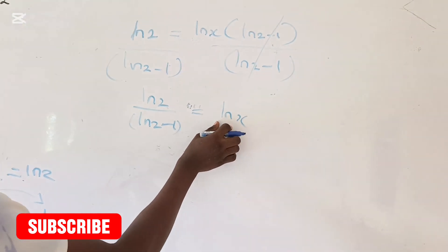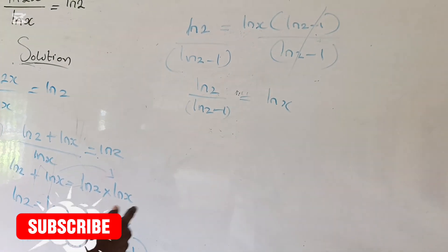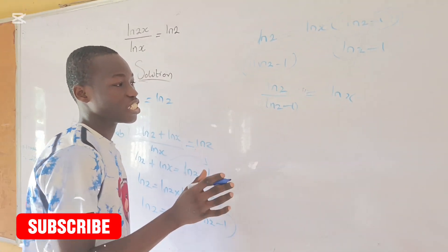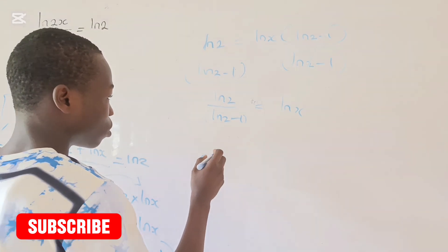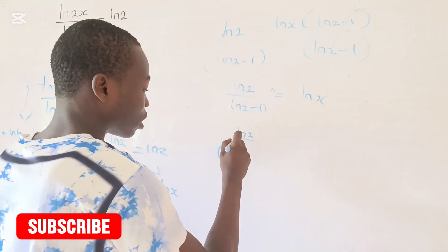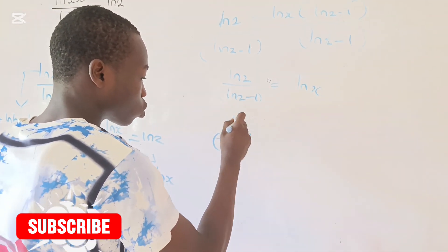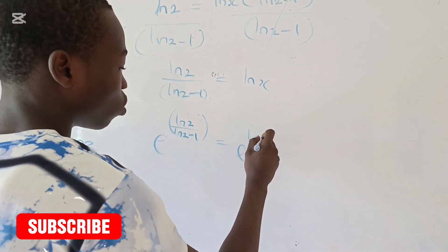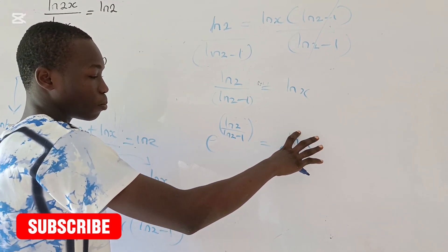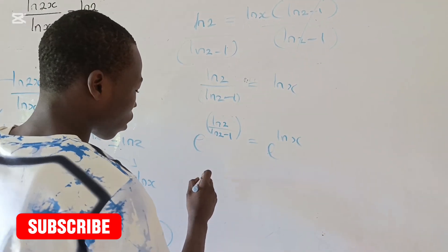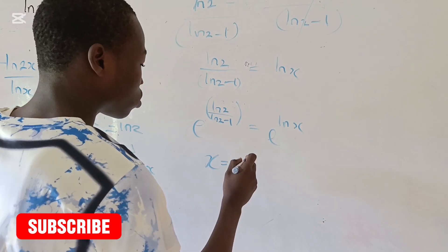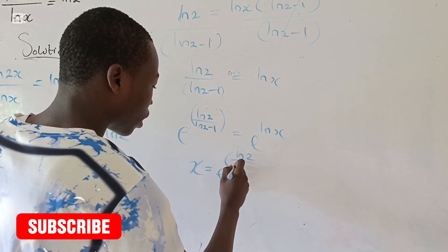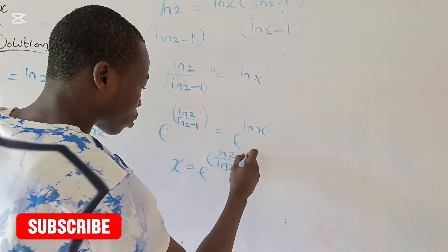Now, to eliminate this natural log, we are going to raise both sides to the power of e. Taking e of both sides, we have e raised to the power of the natural log of 2 divided by the natural log of 2 minus 1, equals e raised to the power of the natural log of x. This eliminates the natural log, giving us x equals e raised to the power of the natural log of 2 divided by the natural log of 2 minus 1.